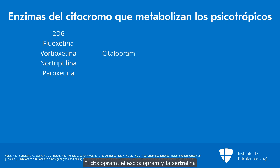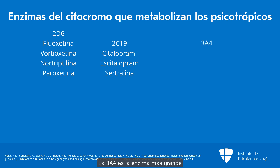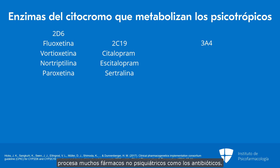Citalopram, escitalopram, and sertraline are metabolized by 2C19. 3A4 is the largest enzyme in this P450 family and processes a lot of non-psychiatry medicines, such as antibiotics.